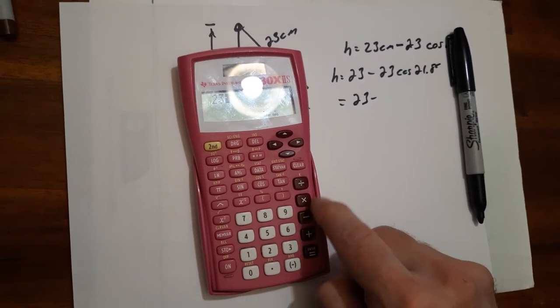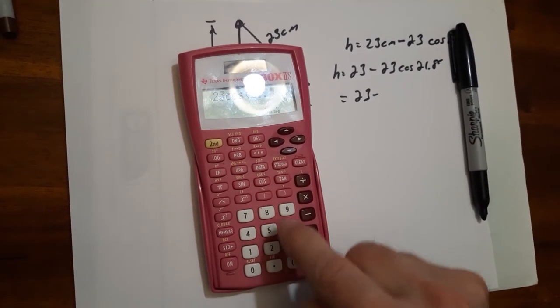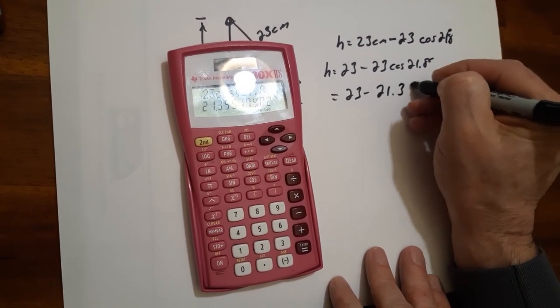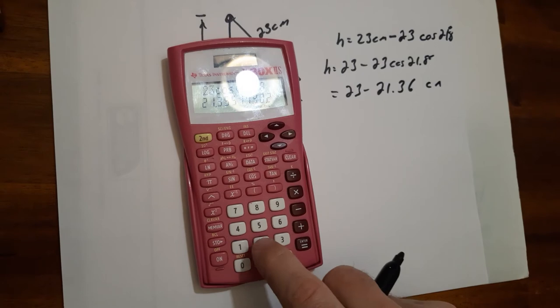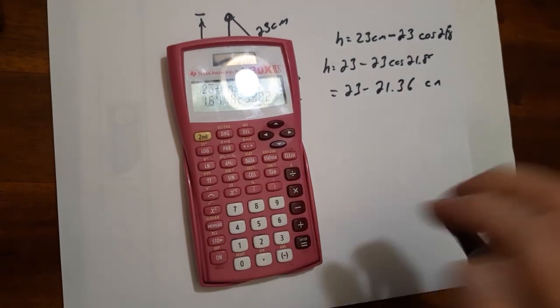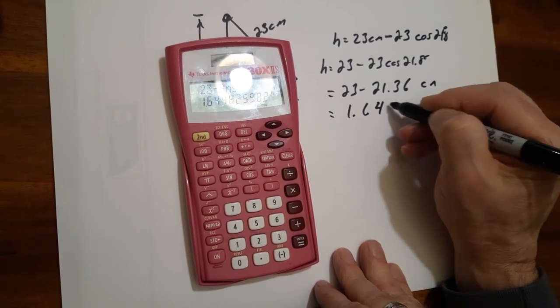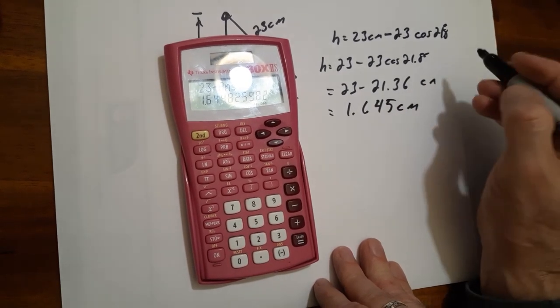23 cosine 21.8. So 1.645 centimeters is H.